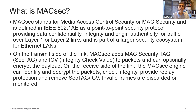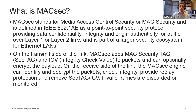On the transmit side of the link, MacSec adds a SEC tag and an ICV (integrity check value) to the packet and can optionally encrypt the payload. On the receive side of the link, the MacSec engine can identify and decrypt these packets, check the integrity, provide replay protection, and remove the SEC tag and ICV. Invalid frames are discarded or can be monitored.